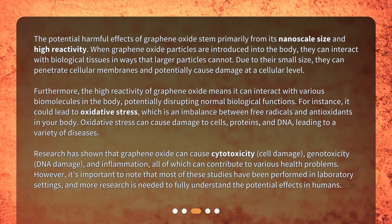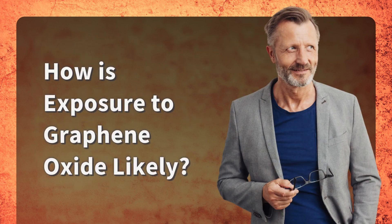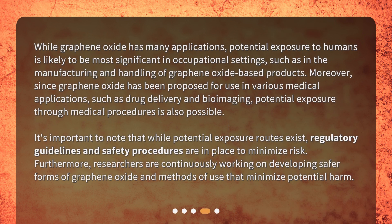However, it's important to note that most of these studies have been performed in laboratory settings, and more research is needed to fully understand the potential effects in humans. How is exposure to graphene oxide likely? While graphene oxide has many applications, potential exposure to humans is likely to be most significant in occupational settings, such as in the manufacturing and handling of graphene oxide-based products.